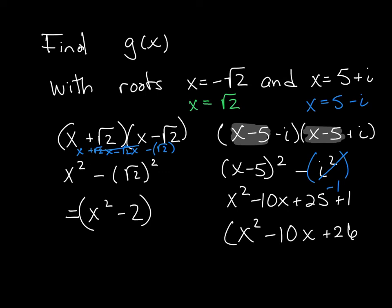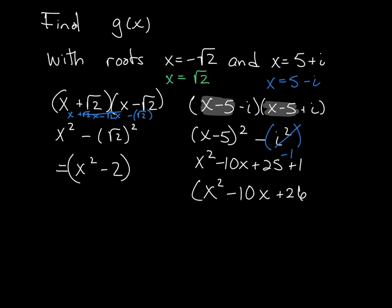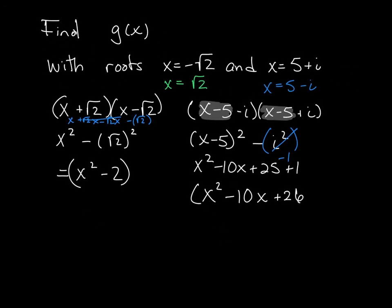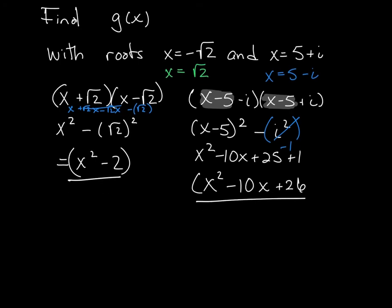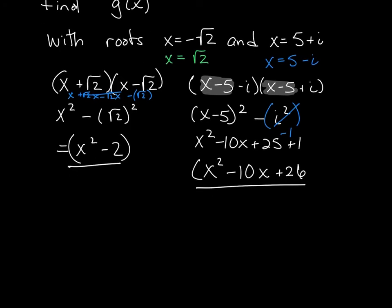All right. So to finish finding g(x), what we're going to have to do is multiply all of that together. So g(x) is going to be x squared minus 2 times all of this. I'm going to do this in two different places. I'm going to go ahead and first multiply through by x squared.